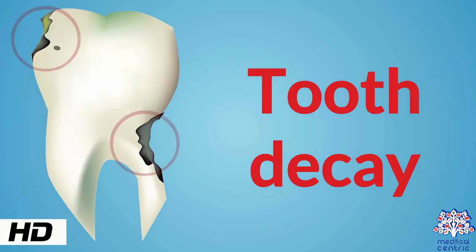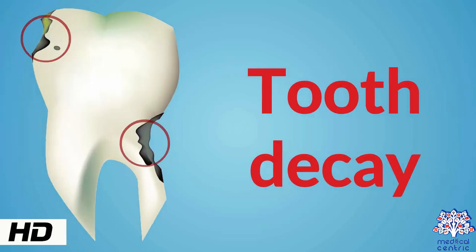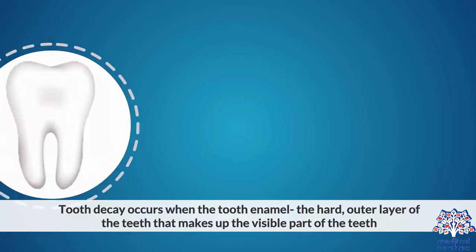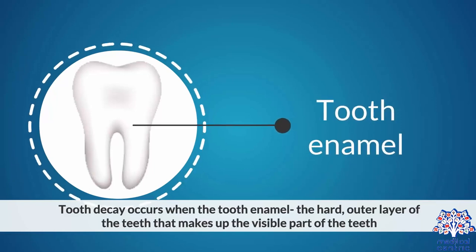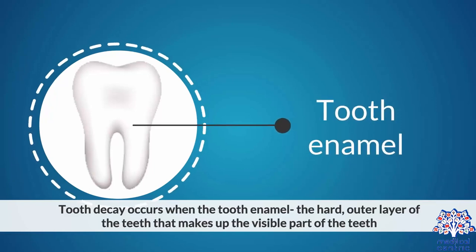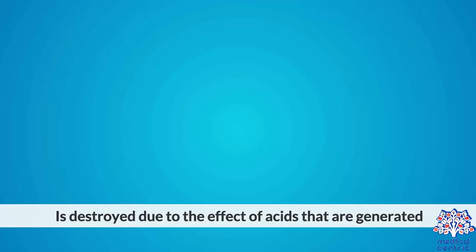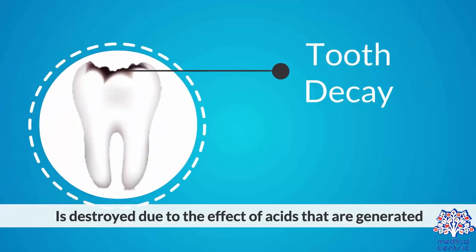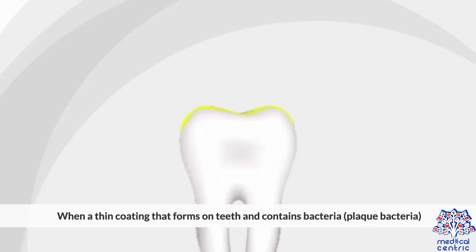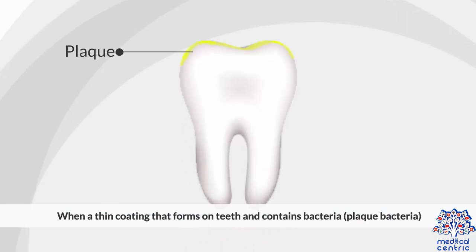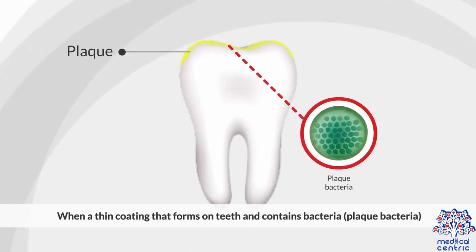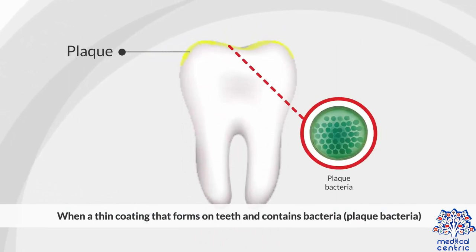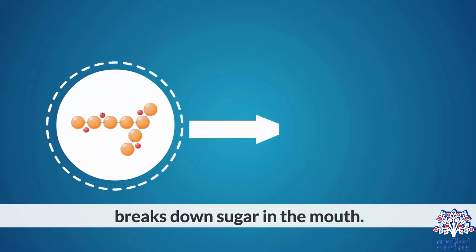Today's topic is tooth decay. Tooth decay occurs when the tooth enamel, the hard outer layer of the teeth that makes up the visible part of the teeth, is destroyed due to the effect of acids that are generated when a thin coating that forms on teeth and contains bacteria, or plaque bacteria, breaks down sugar in the mouth.